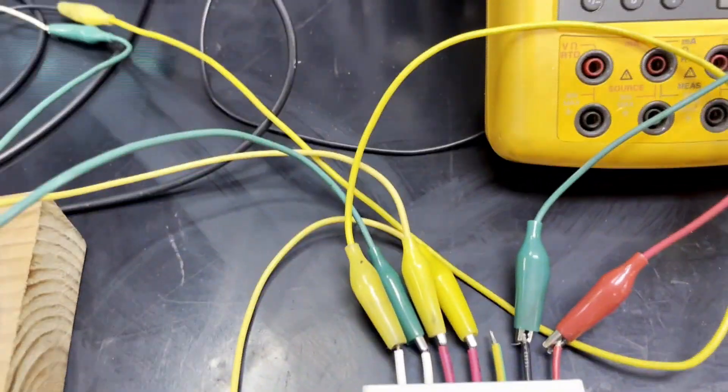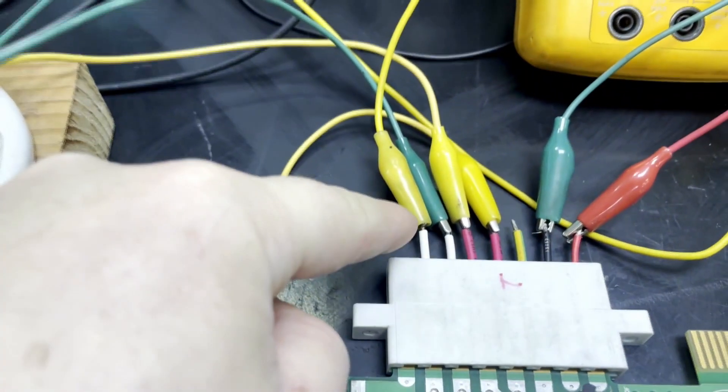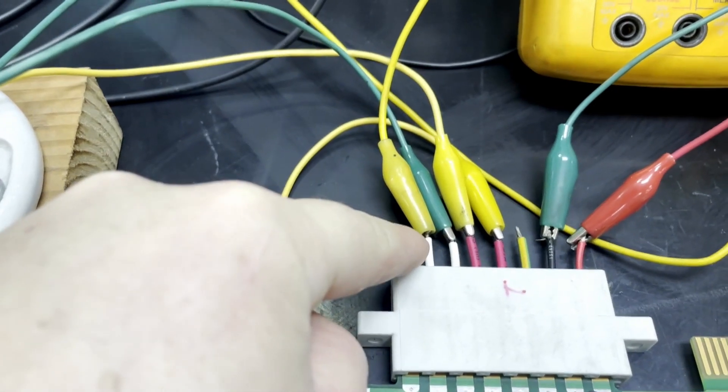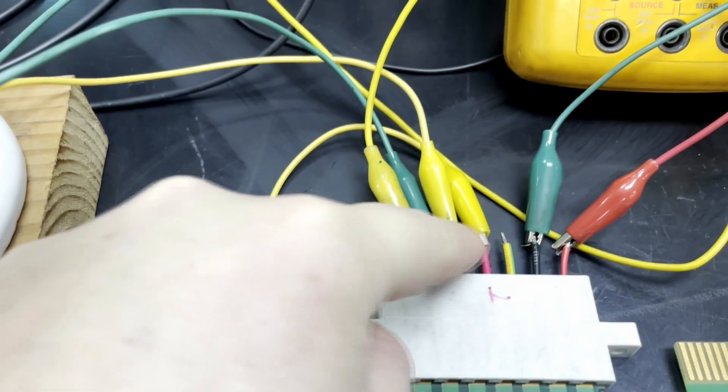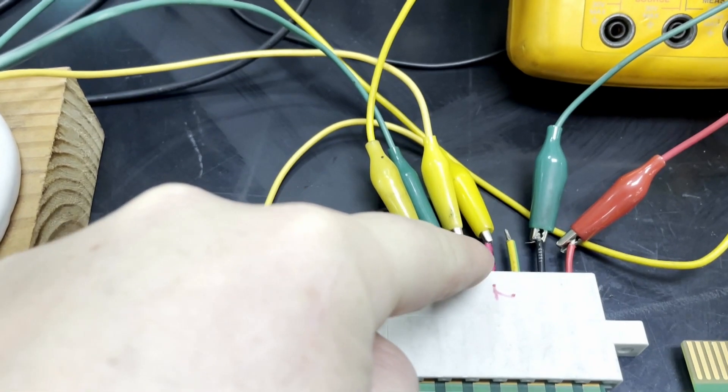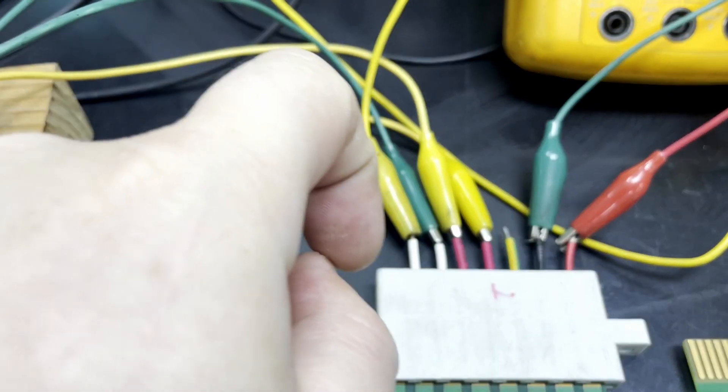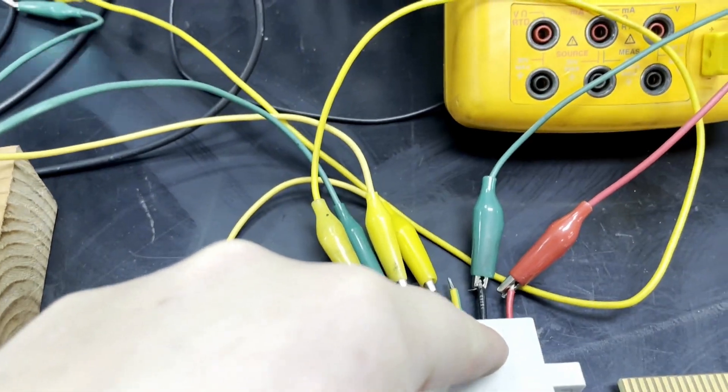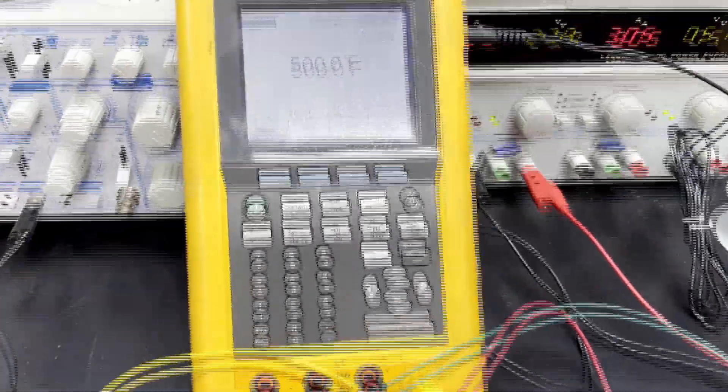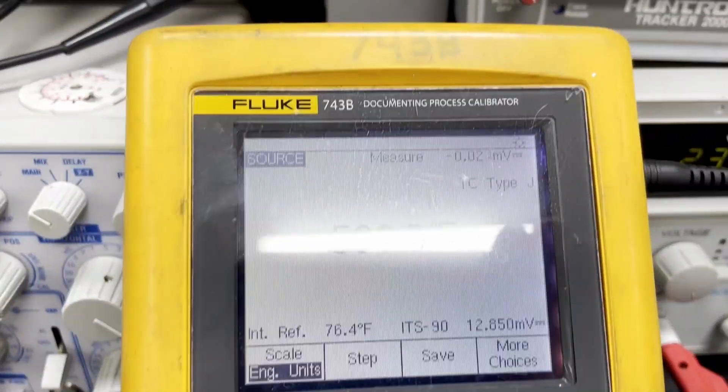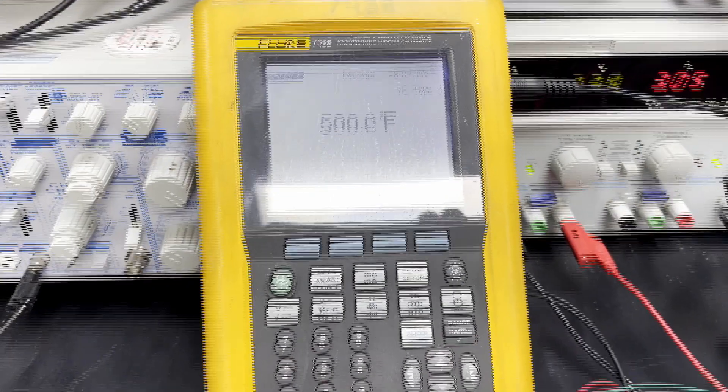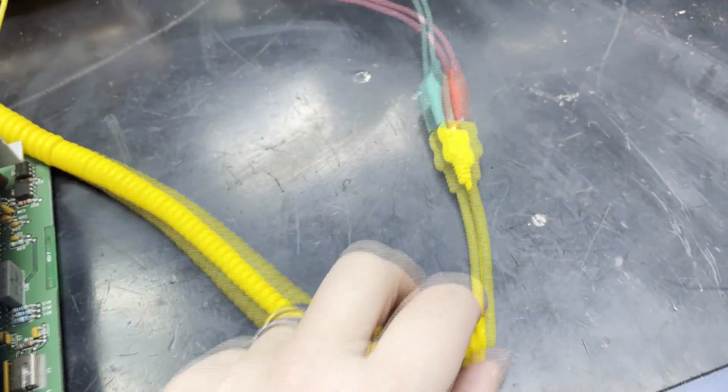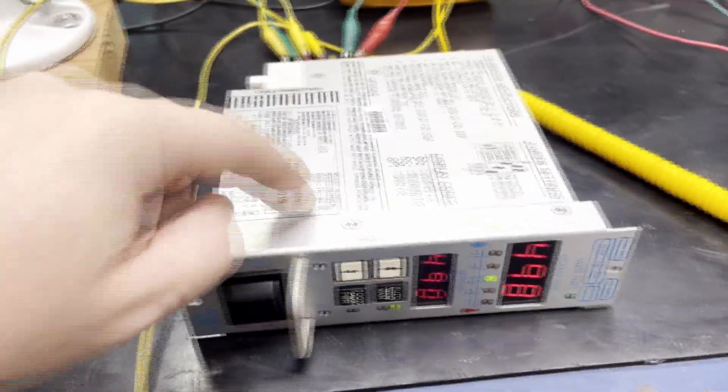So here we have our connection set up, which is we have our 220 AC coming in here. We have our lamp set up on the output of these two plugs here, and then we have our positive and negative inputs to our simulator, which is the Fluke 743B Documenting Process Calibrator, which will provide a simulation of a J-type thermocouple that would normally be plugged into this device to give us a temperature reading in the system.